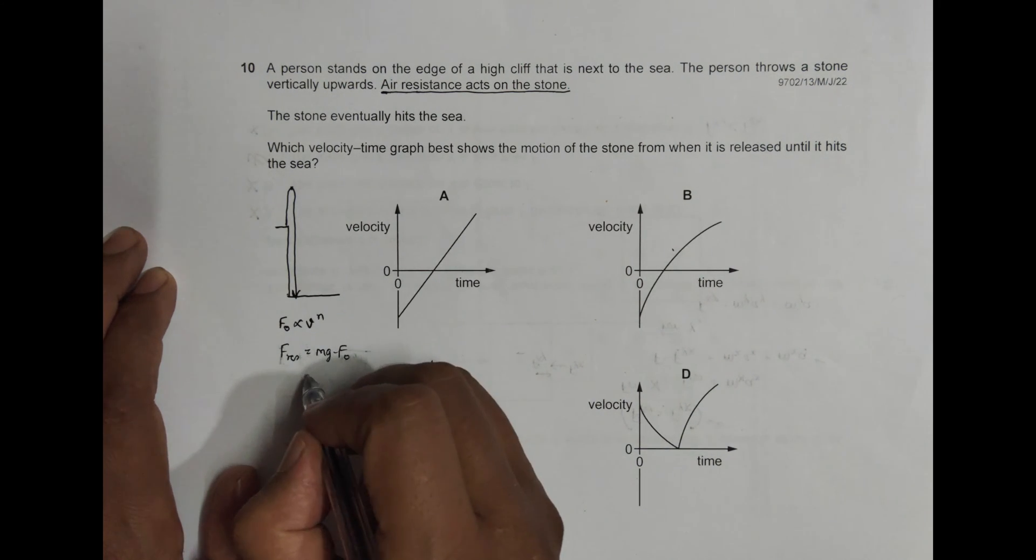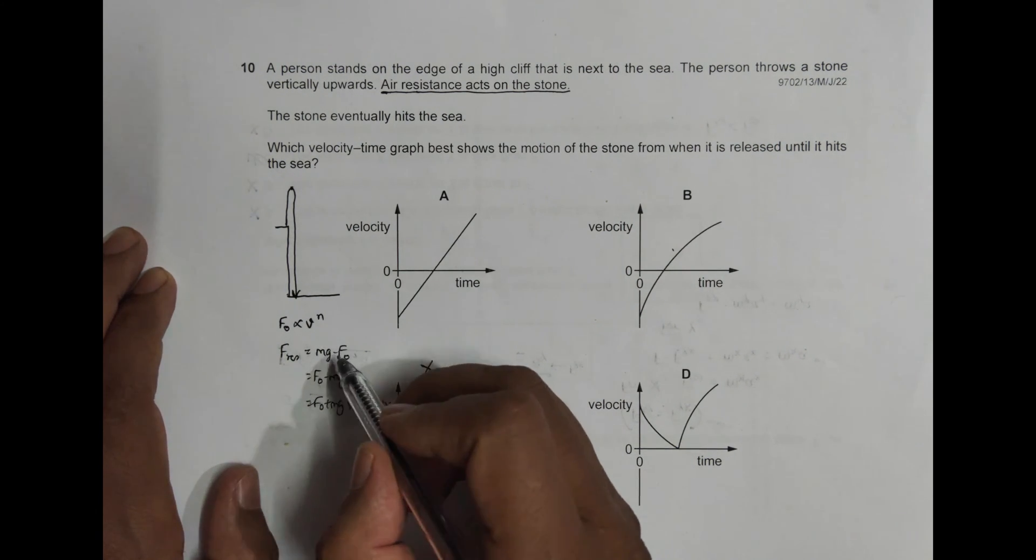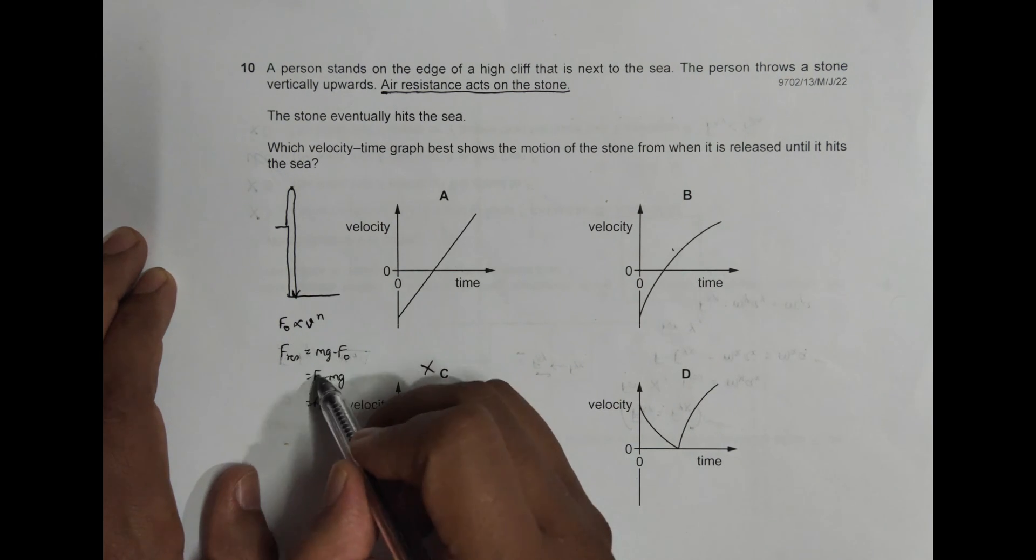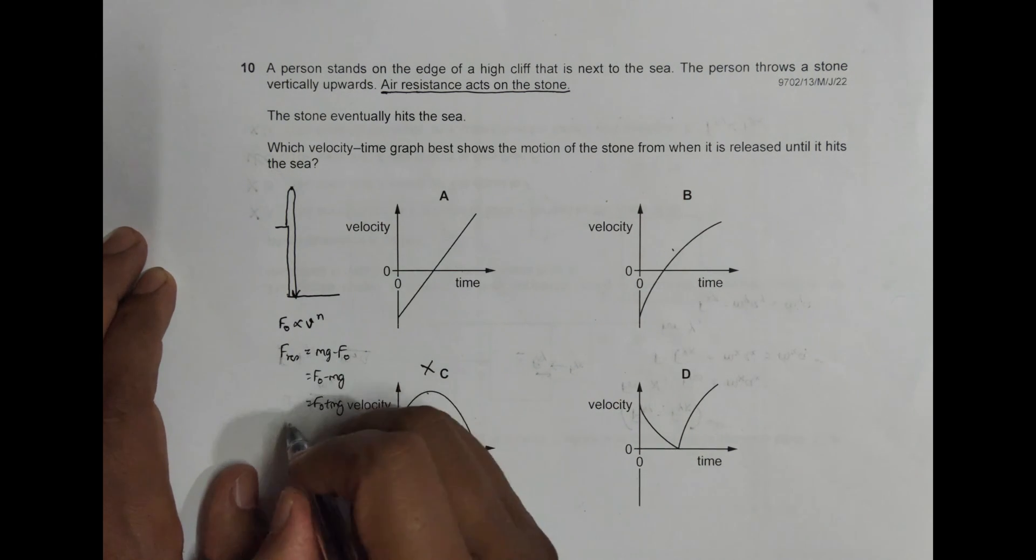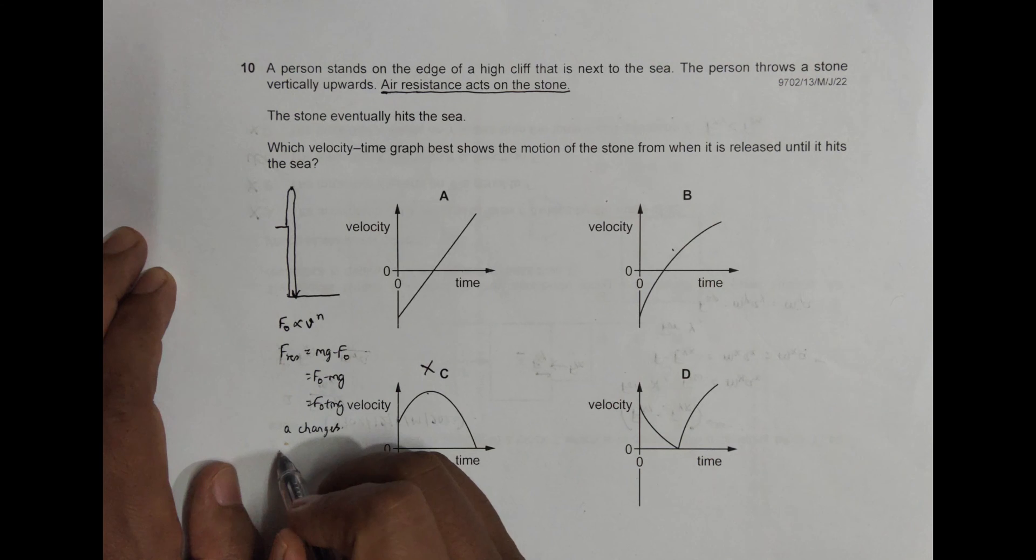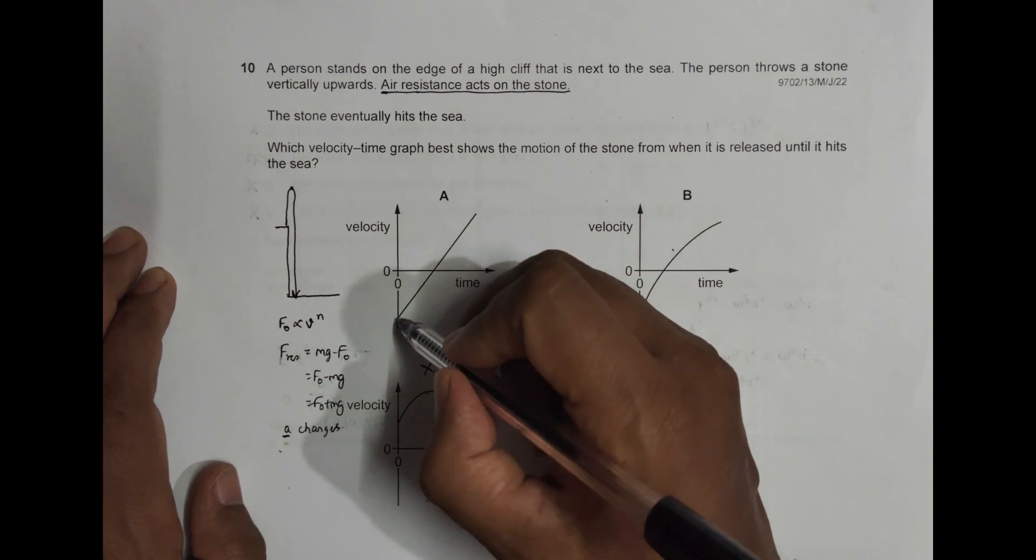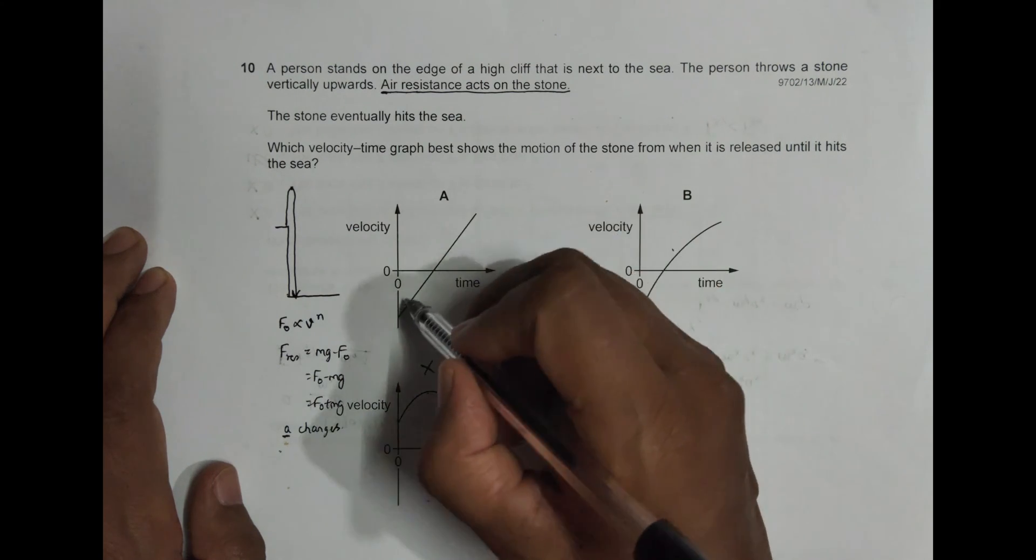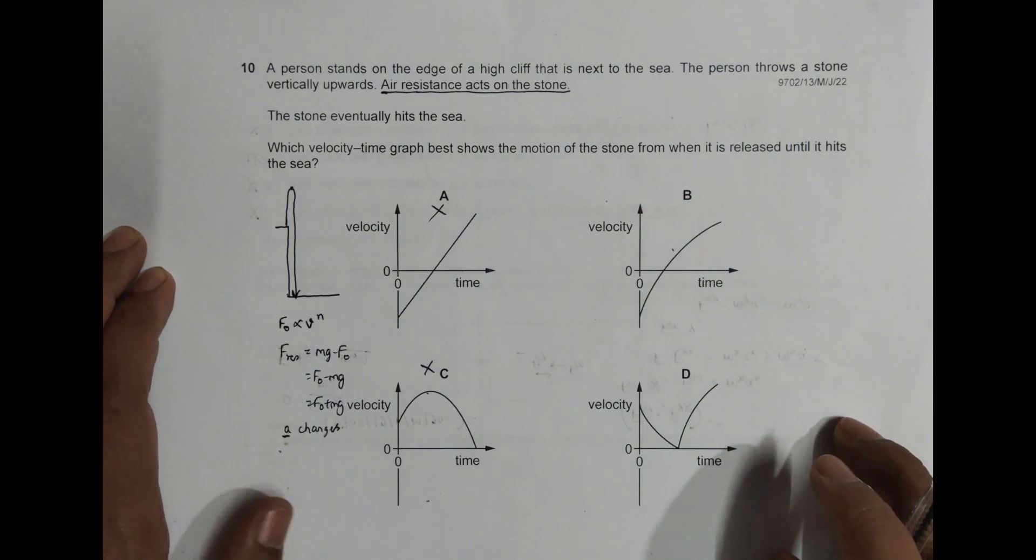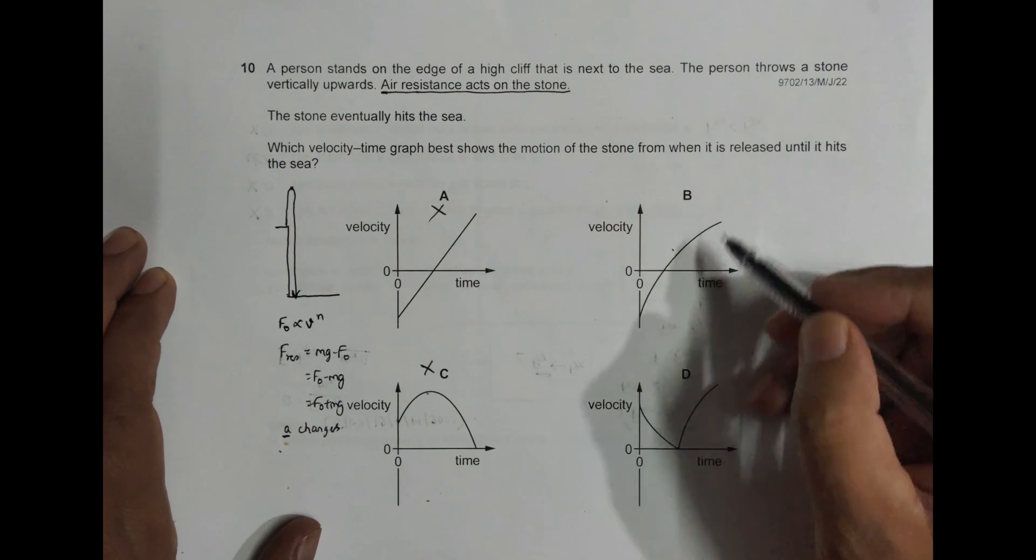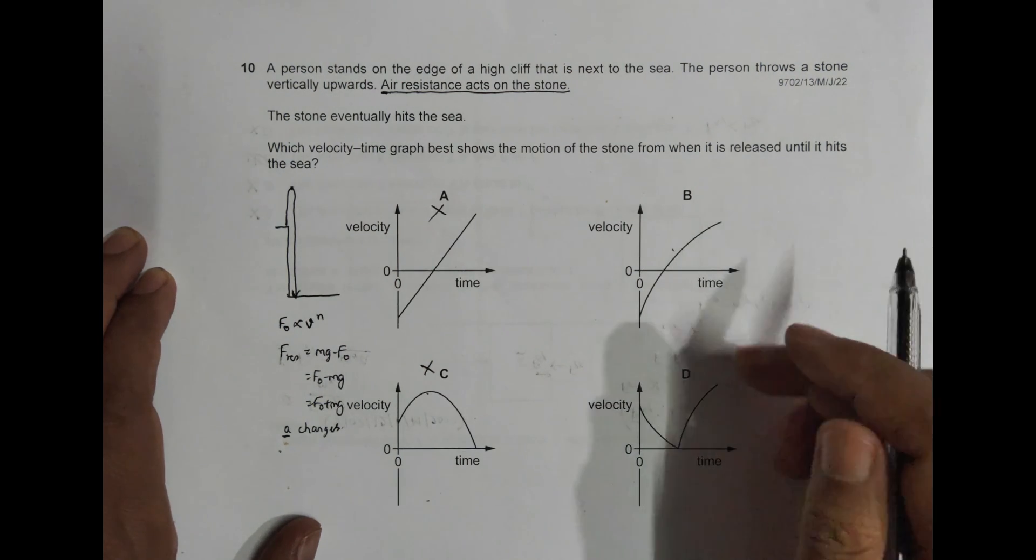The resultant force could be mg minus Fo, or Fo minus mg, or Fo plus mg. If v changes, Fo changes, and thus F resultant changes. If this changes, acceleration changes. And acceleration change means the slope of the v-t graph changes. Here the slope is constant, so this is incorrect. The slope should change. Here the slope changes, and here too, so these two are the remaining choices.